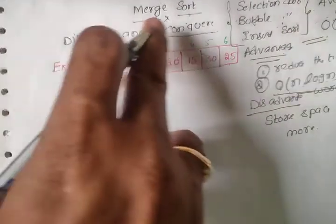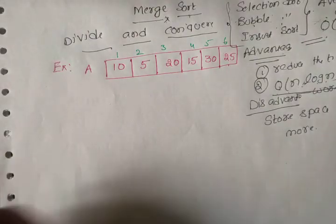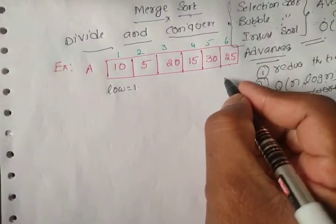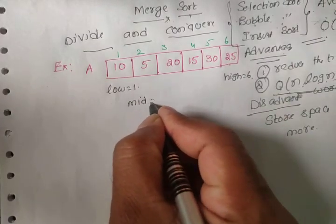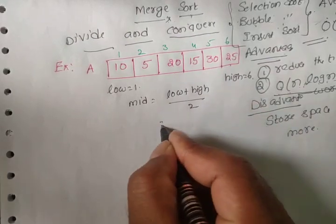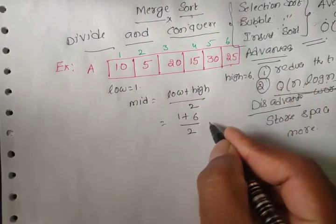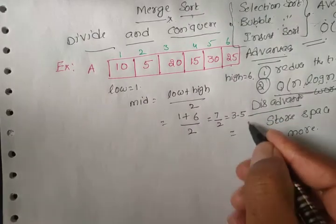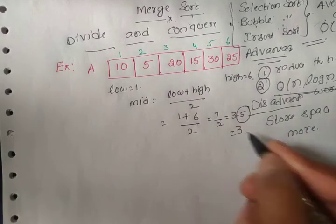Now we go to divide and conquer. First, divide. What is the low value? Low is 1. What is the high value? That is 6. Based on this we calculate the mid value: mid = (low + high) / 2 = (1 + 6) / 2 = 7/2 = 3.5, but we need only integer values, so mid = 3.